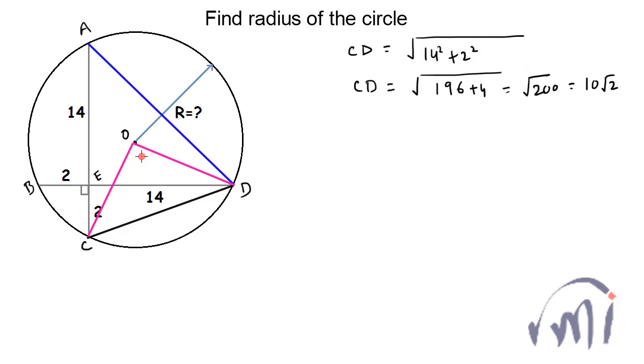So here it will be a right angle, and then COD is actually a right angle triangle where CO is equal to OD and both of them are equal to the radius of the circle. That means CD square is also equal to R square plus R square, or you can say CD is equal to R root 2. And from here CD is equal to 10 root 2, that means the radius of the circle is equal to 10.